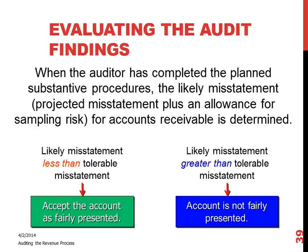For example, if you are confirming accounts receivable and the client has the customer's accounts receivable recorded as $500,000, but when you got the customer confirmation back the customer said they only owe $400,000 because they returned those goods before year end on 12-30-2013 — but the client still has $500,000 posted — the difference of $100,000 is a known misstatement. That account is misstated by $100,000.